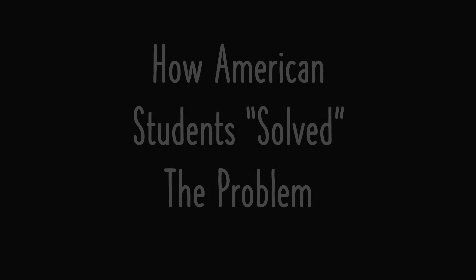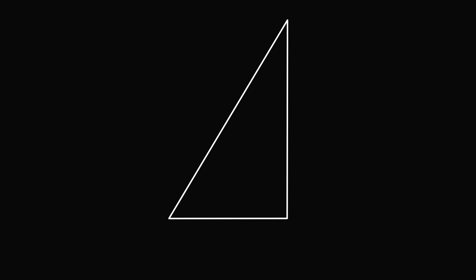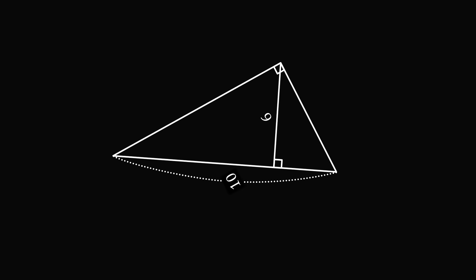So now, back to the problem. Let's go over how American students quote-unquote solve the problem. So we have a right triangle, and we have a hypotenuse with a length of 10 inches. Upon the hypotenuse is an altitude that is dropped on it with a length of 6 inches. So what's the area of the triangle? Let me just rotate this diagram so that it matches the diagram shown in textbooks.